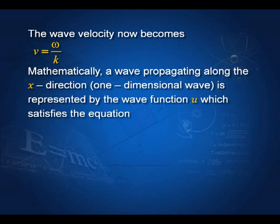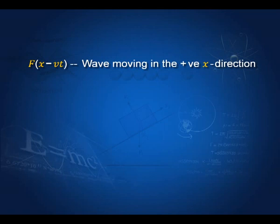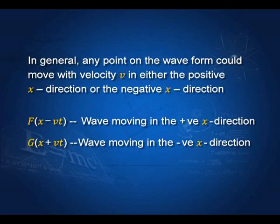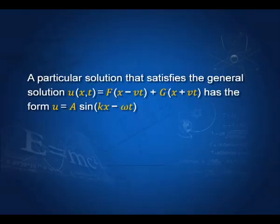Mathematically, a wave propagating along the x direction is represented by the wave equation, where v is the wave velocity. The general solution is: f(x − vt) traveling in the positive x direction, and g(x + vt) traveling in the negative x direction. The general solution is the sum of these two parts — one wave moving in the positive x direction, the other in the negative x direction, and each point on the wave can have both motions.